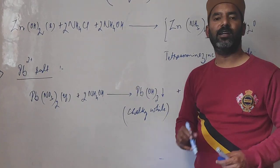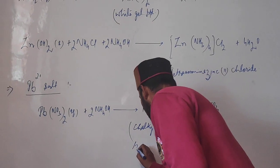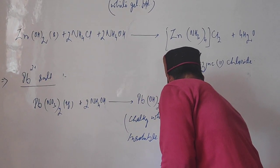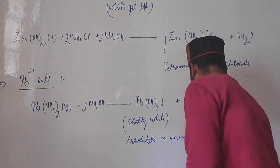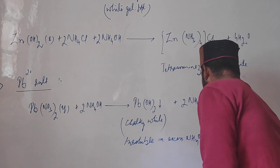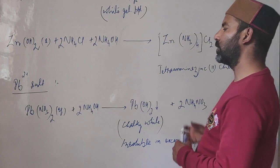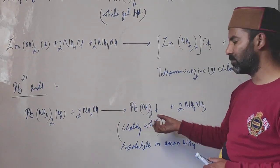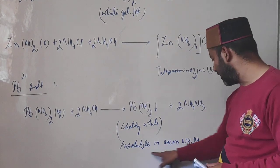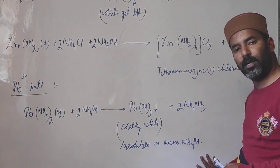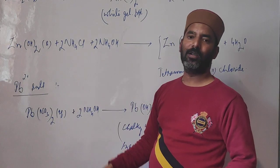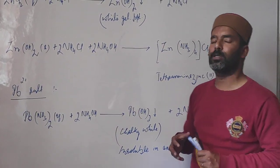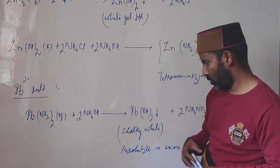This lead hydroxide precipitate remains insoluble in excess ammonium hydroxide — it will not dissolve further. So if a salt gives a chalky white precipitate upon adding ammonium hydroxide, which remains insoluble in excess ammonium hydroxide, the salt contains lead Pb²⁺ ions.